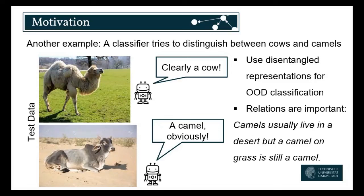This has another motivation, because if we had so-called disentangled representations — representations where we have variables that represent one meaningful thing in non-scientific terms — then we could say the camel is really this part of the image, and based on this we should classify as a camel and not based on the background. And if we have such representations, we shouldn't only care about which parts of the image belong to which variables, but also how they relate to each other. As humans, we know that camels usually live in a desert, but we know that if we see a camel on grass, it's still a camel. So not only having some representations, but also understanding the relations between them is important.